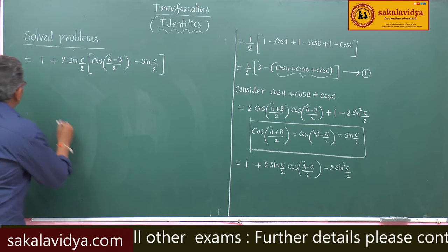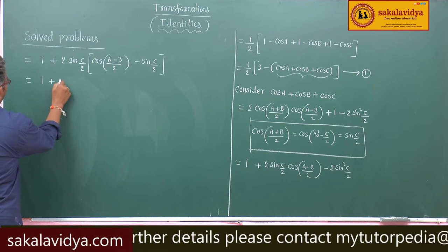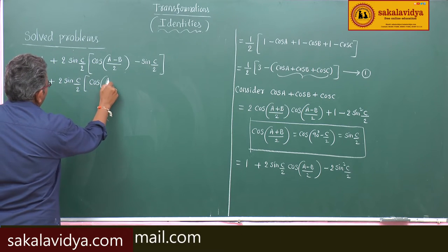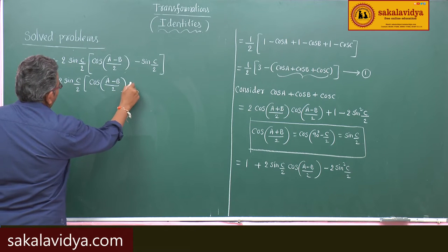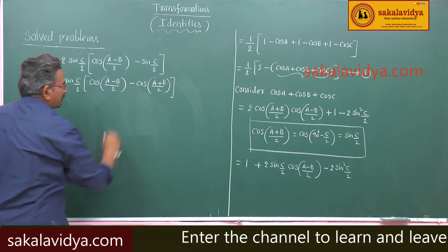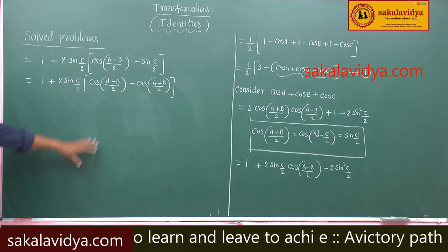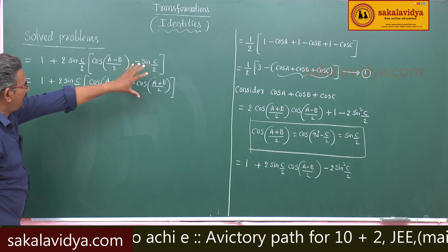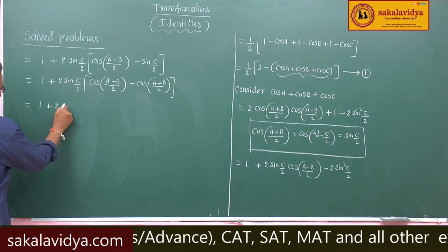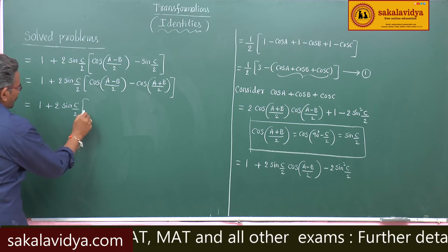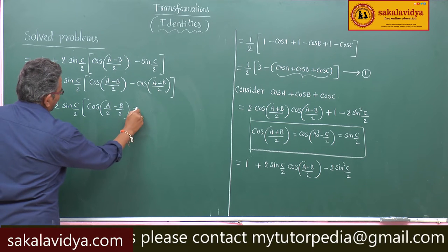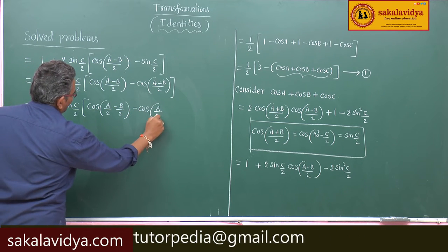Since sin(C/2) can be written as cos((A+B)/2), this becomes 1 plus 2sin(C/2) into cos((A-B)/2) minus cos((A+B)/2). For convenience, cos((A-B)/2) minus cos((A+B)/2) can be written as cos(A/2 - B/2) minus cos(A/2 + B/2).